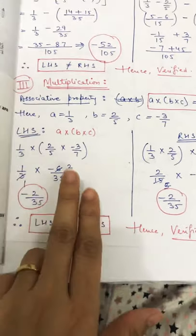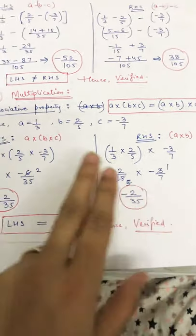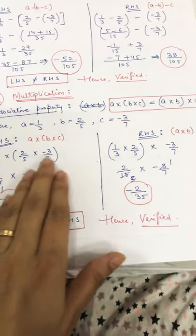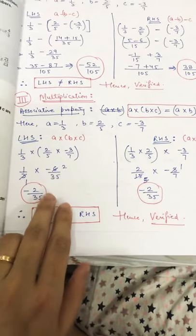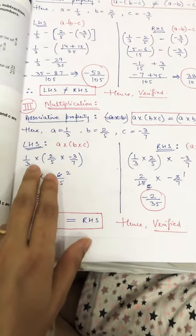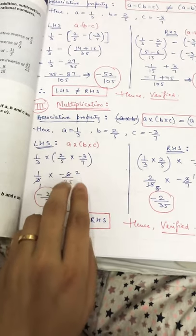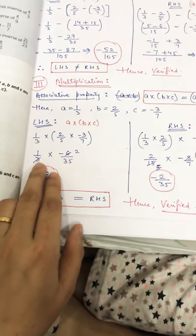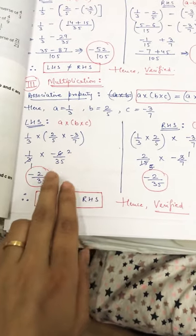This is your left hand side and right hand side. We have placed the values a, b, and c in left hand side and right hand side. Now here it will be 1 by 3 into — after solving this bracket it is minus 6 upon 35. 3 will cancel with 6 and it will be minus 2 upon 35.